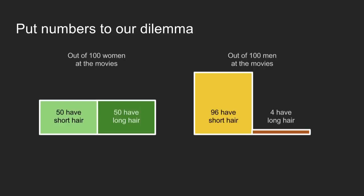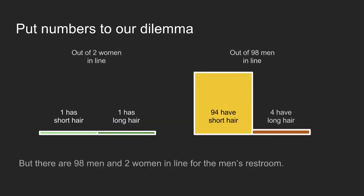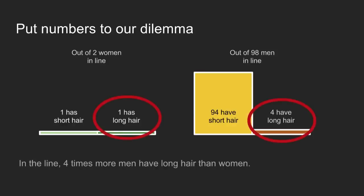To put numbers to this dilemma at the movie theater, let's assume out of 100 women at the movies, 50 have short hair and 50 have long; and out of 100 men at the movies, 96 have short hair and 4 have long. In this case, there are definitely more women with long hair than men with long hair, so it's a safe bet to assume this person is a woman. Now, we made a subtle assumption that there are about the same number of men and women at the movies. This assumption no longer holds when we move to the men's restroom line. Here, let's say there are two women out of every 100 people and 98 men. There's still one with short hair and one with long hair — still half and half. But now there are four times as many men with long hair as women with long hair in this group. Now the safe money is to bet that this person is a man.